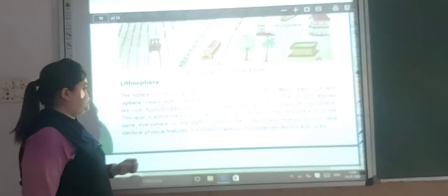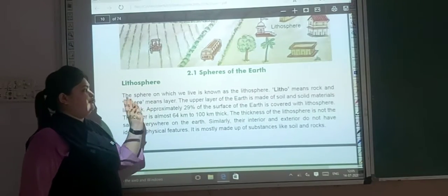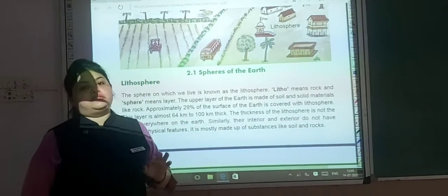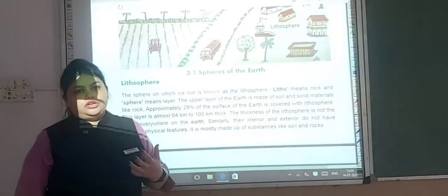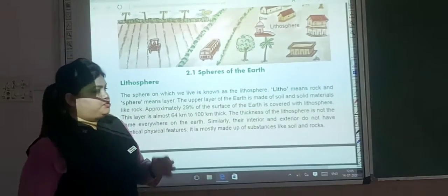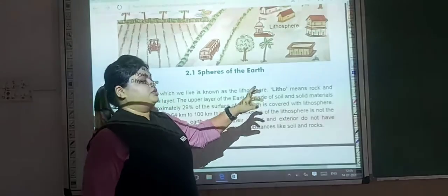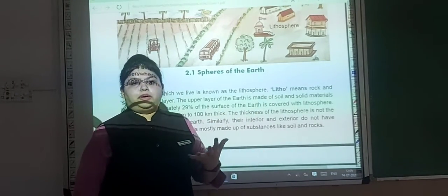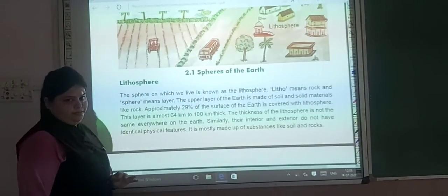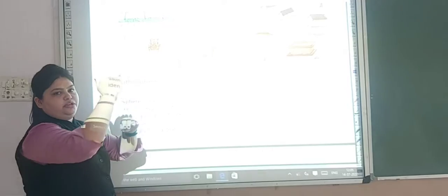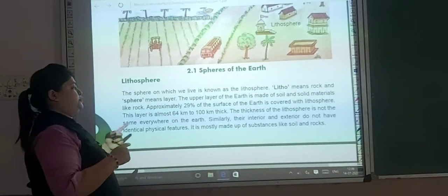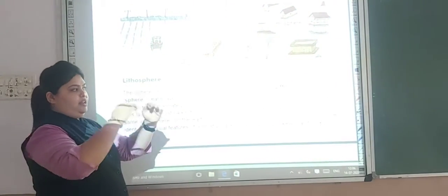Let's start with the lithosphere. The sphere on which we live is known as the lithosphere — it is the solid form. The actual meaning: 'litho' means rock, and 'sphere' means layer. So lithosphere means rock layers — the essential layers of the earth.